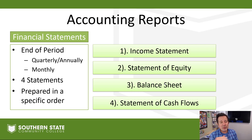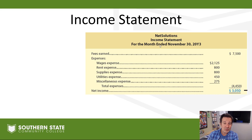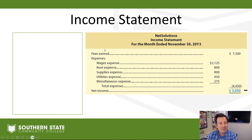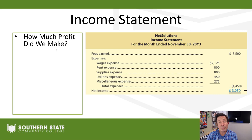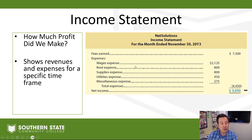What I want to do in our video right now is break each one of these down, tell you what the purpose is, and show you an example. Later on, we'll talk about how to make them. First of all, the income statement. Here we can see our income statement for Net Solutions, our example business. Our income statement is going to tell how much profit we made — or if we didn't make a profit, how much loss we had. It's going to show revenues and expenses for a specific time frame. In our example, we have the month ended November 30th.